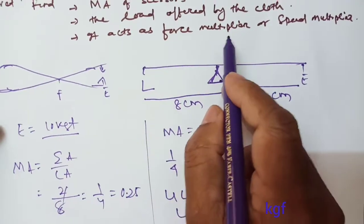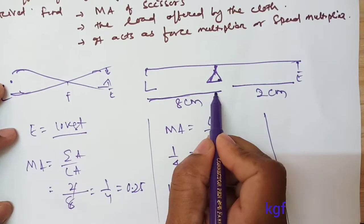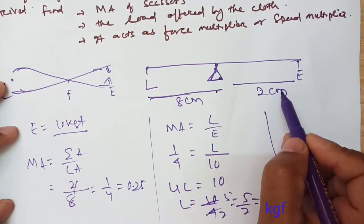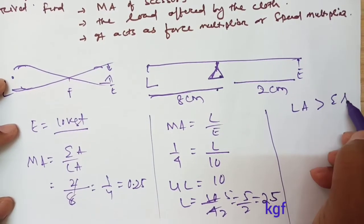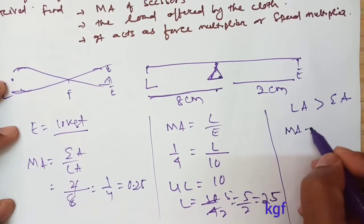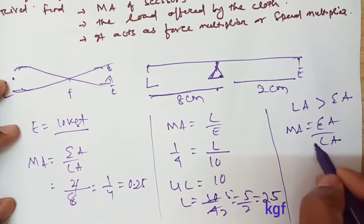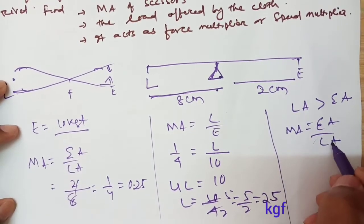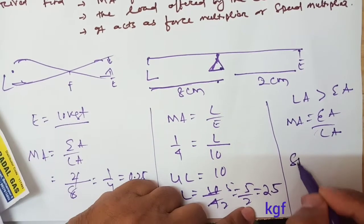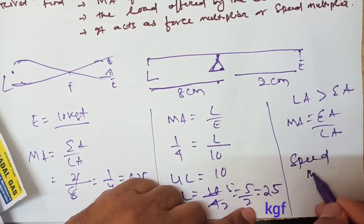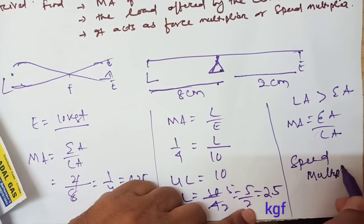Is this a force multiplier or speed multiplier? The load arm is 8 cm and effort arm is 2 cm, so load arm is greater than effort arm. When load arm is greater, the lever acts as a speed multiplier. Class 3 levers always act as speed multipliers.